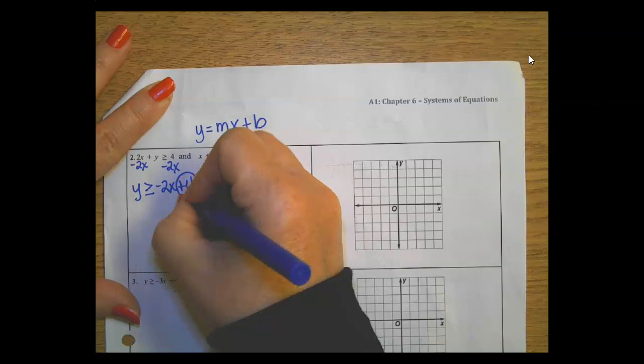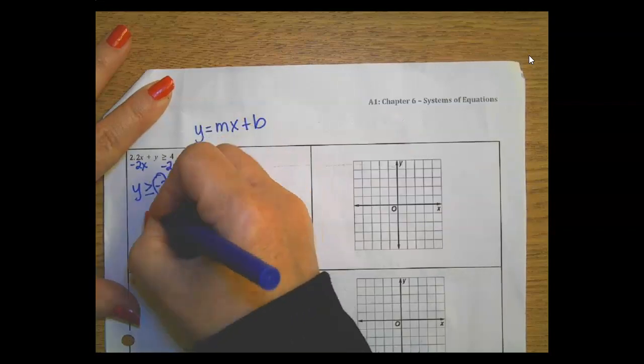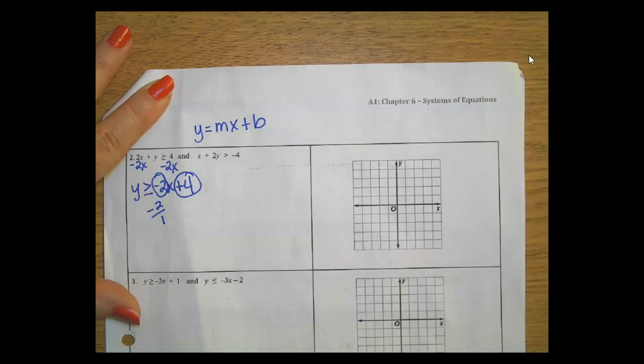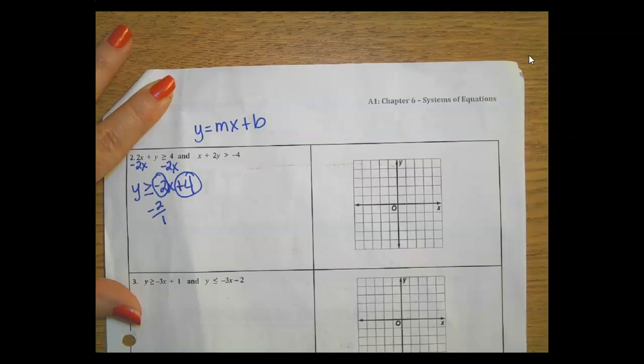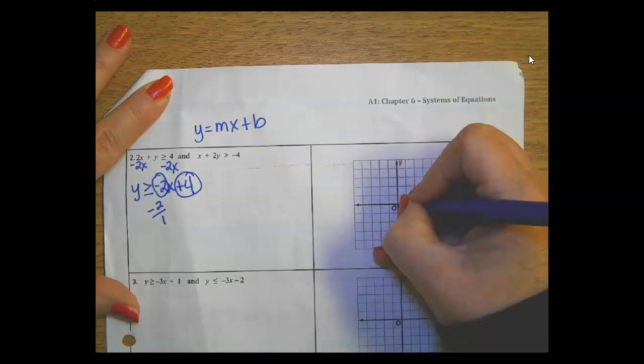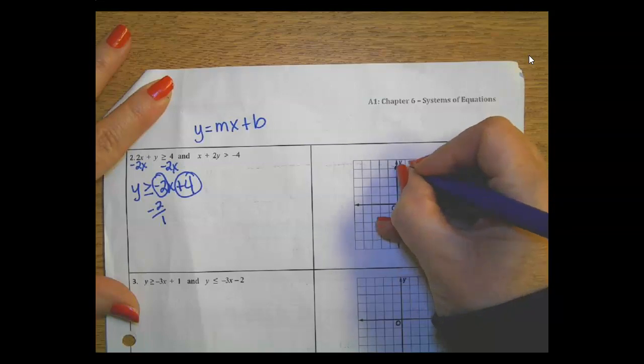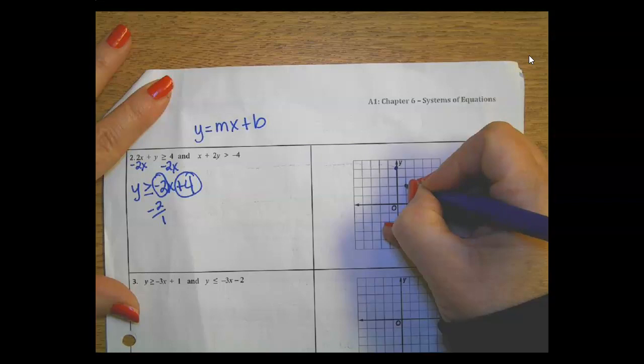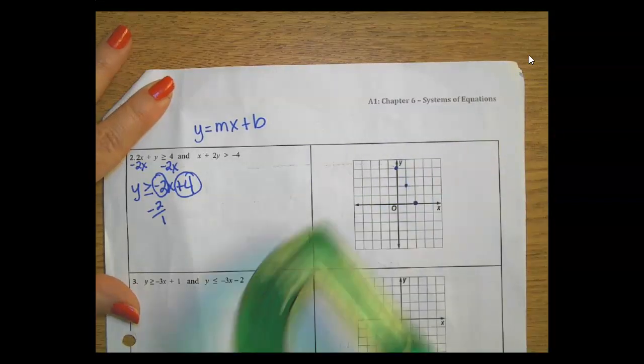Y-intercept, my slope. I'm going to start at 4: 1, 2, 3, 4. Downwards 2, positive 1. Downwards 2, positive 1.